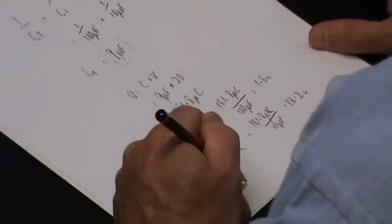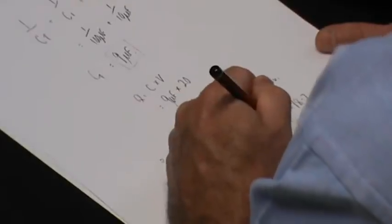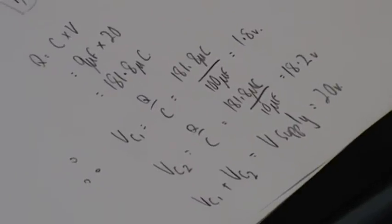VC1 plus VC2 equals V supply, equals 20 volts. And the circuit on your module books here, there's our supply. That voltage plus that voltage has got to add up to the total supply voltage.